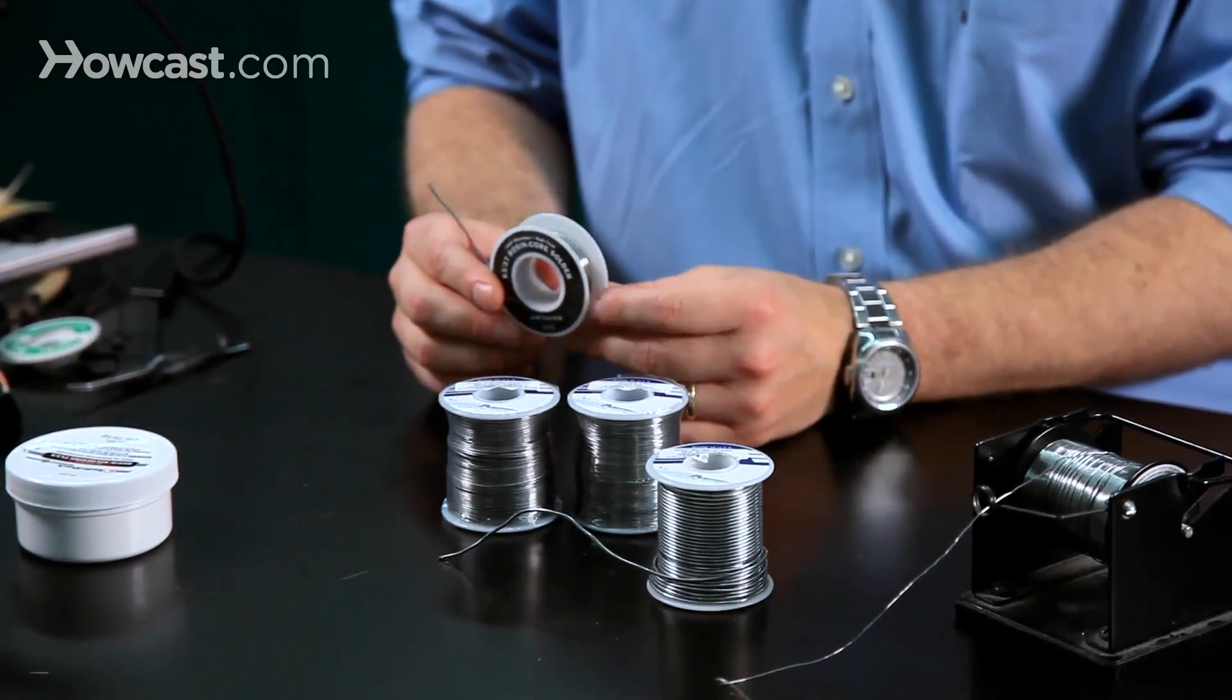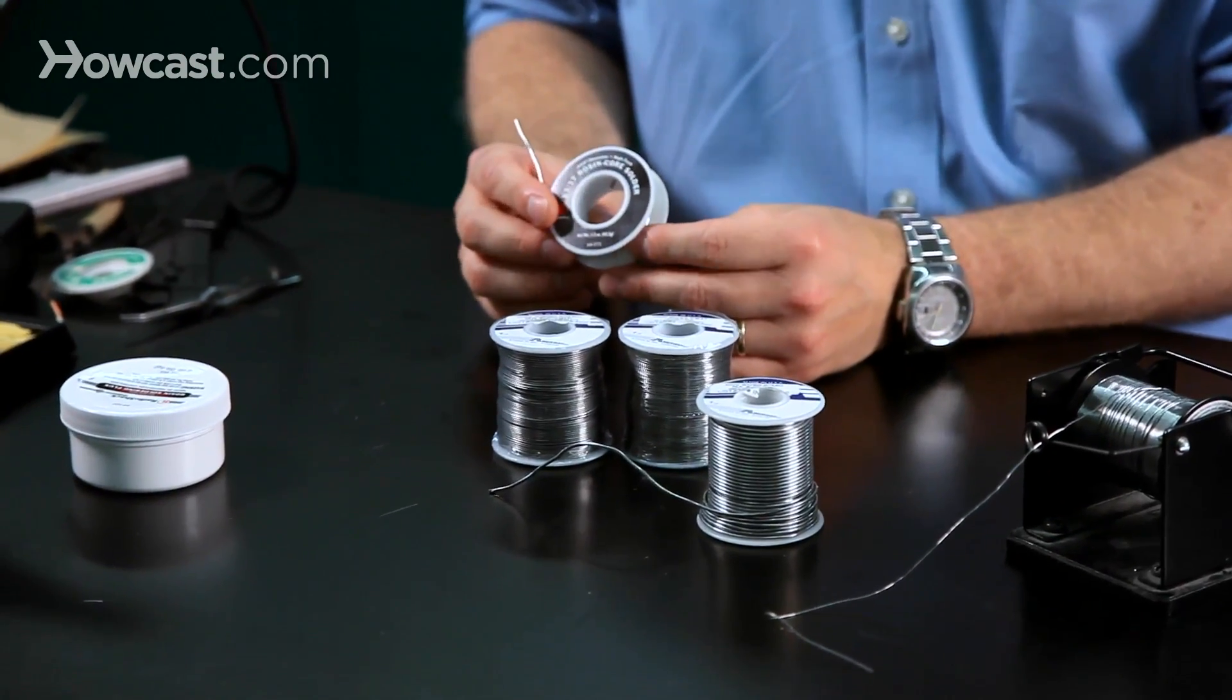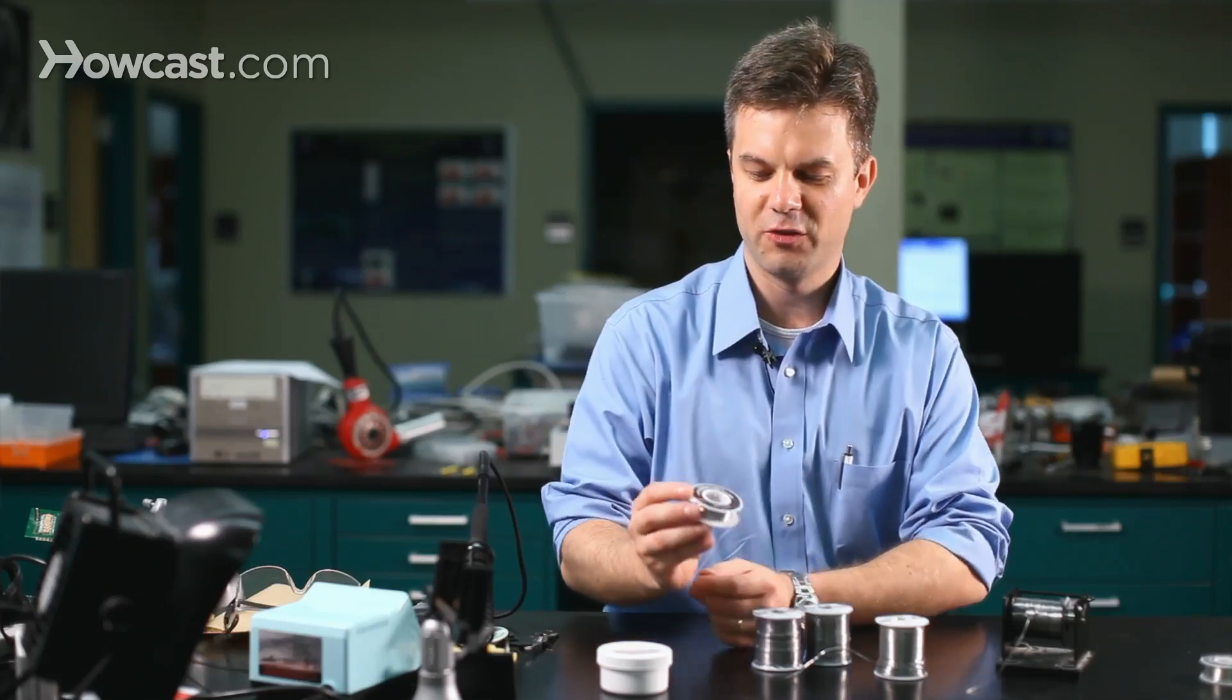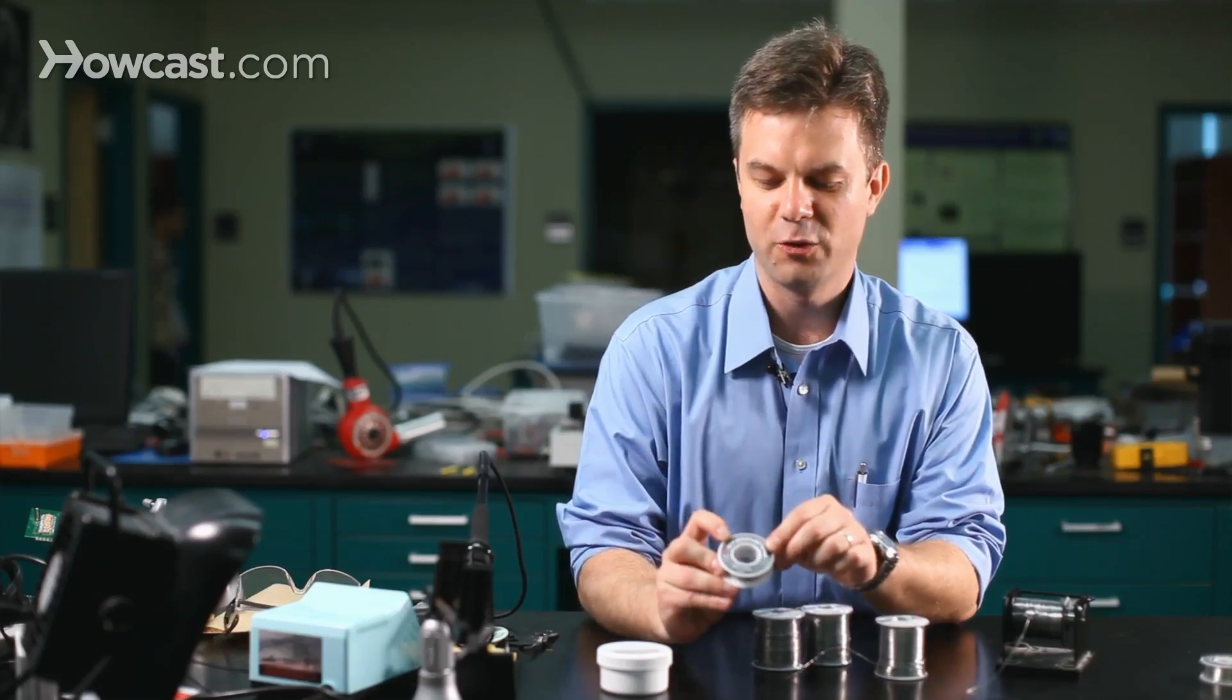Most commonly, we're using eutectic solder, which is a combination of tin and lead. This is eutectic solder. This is 63% tin, 37% lead.